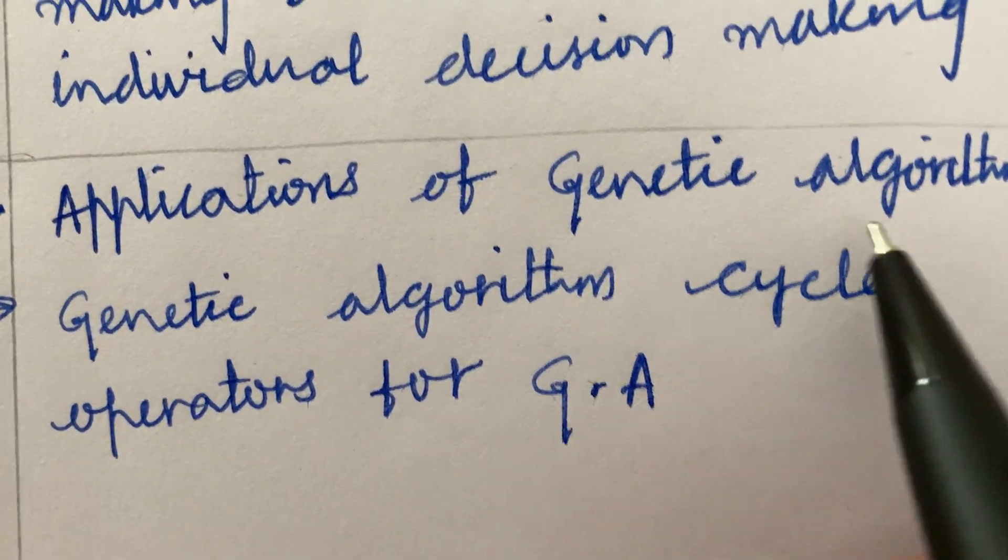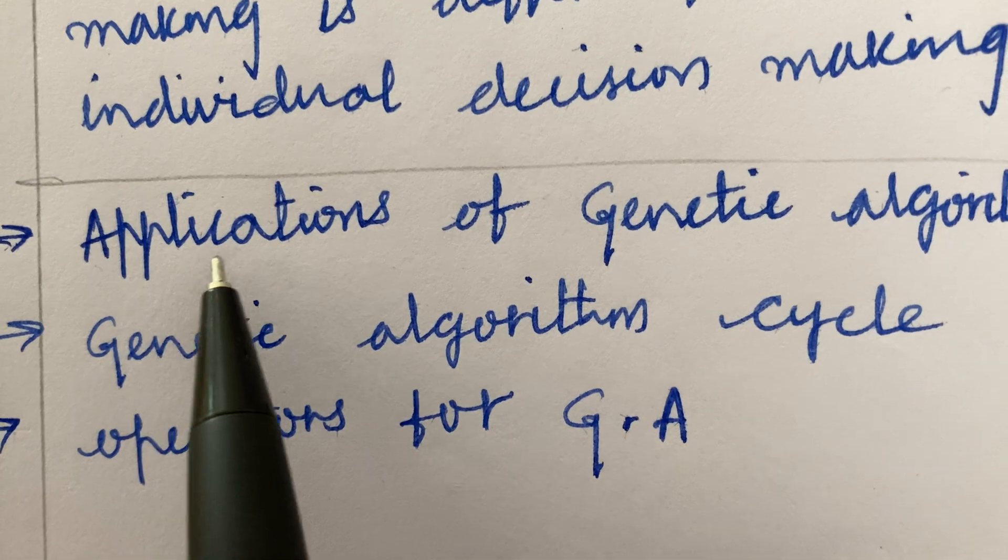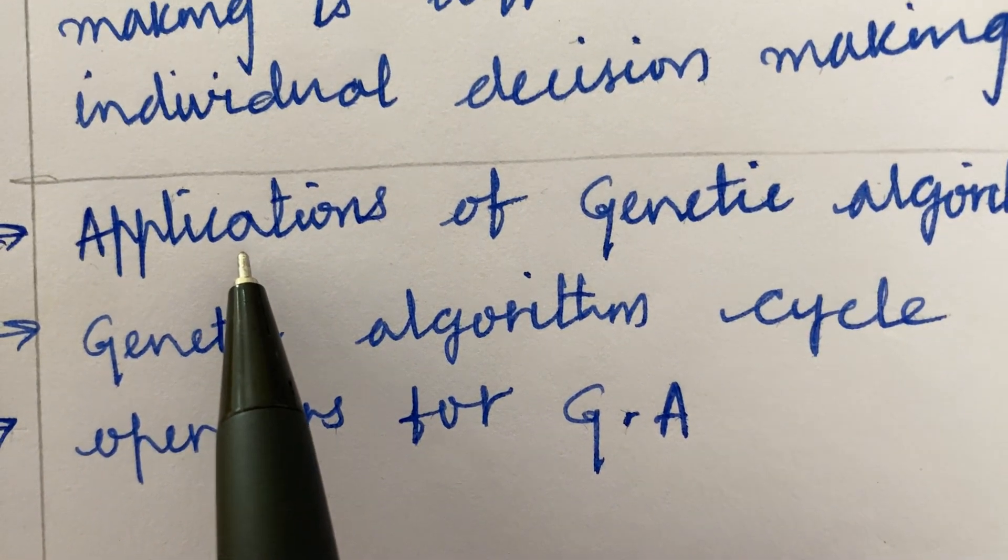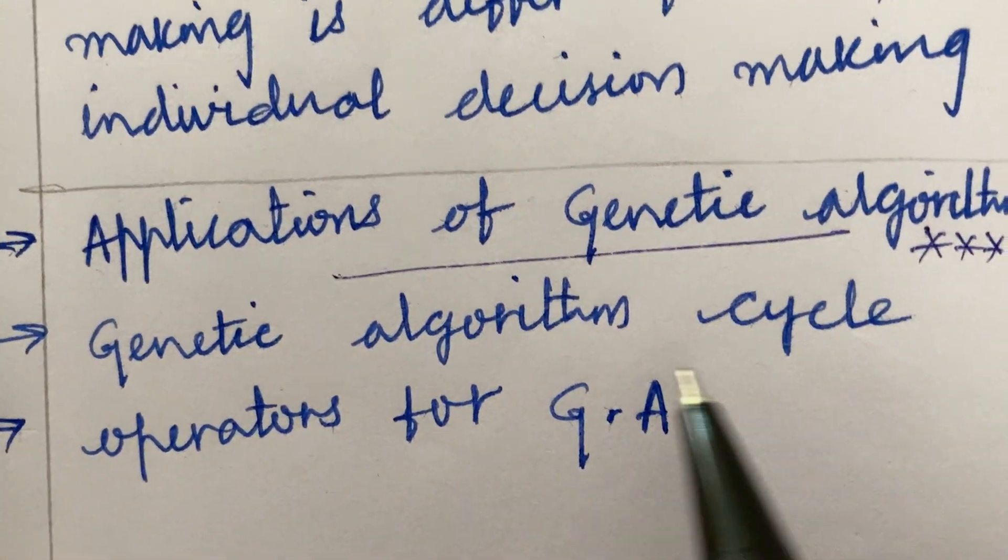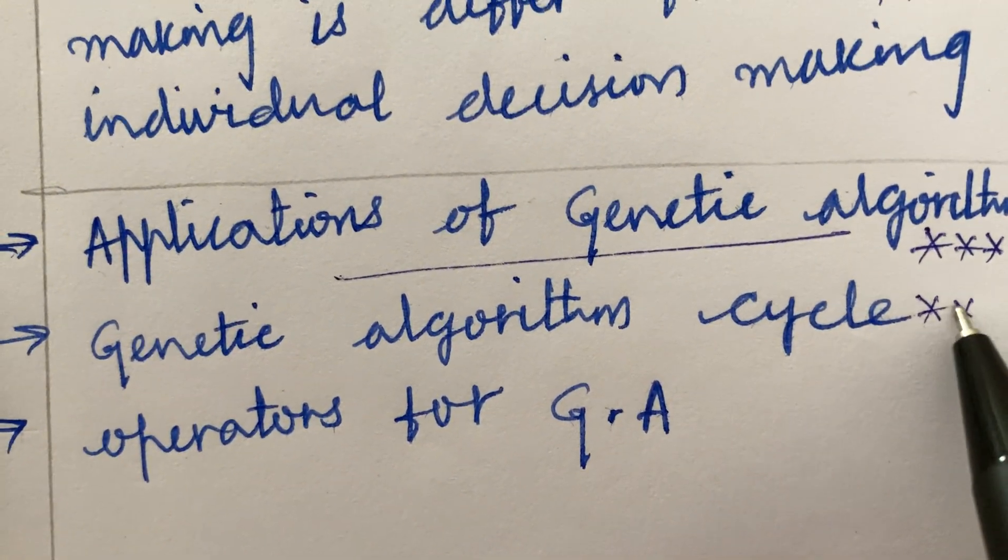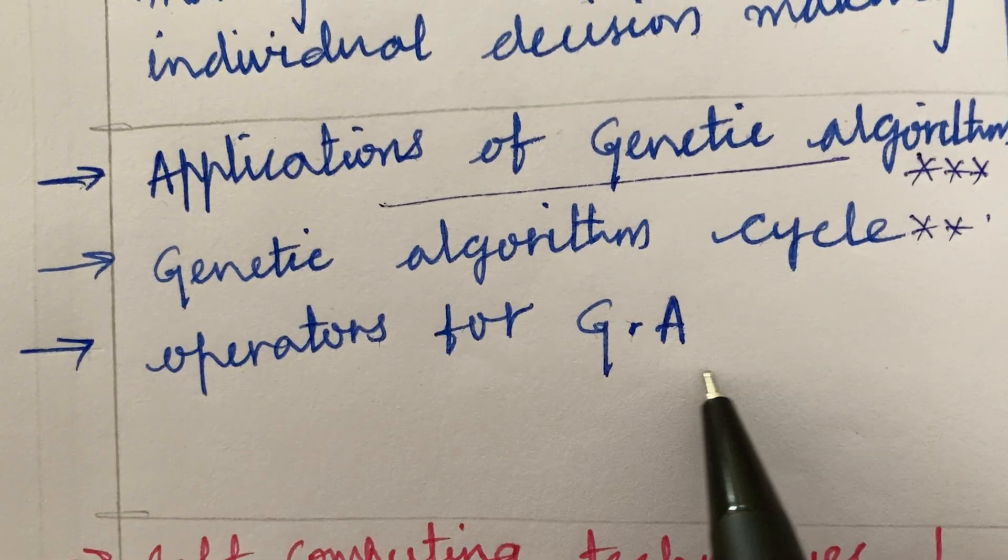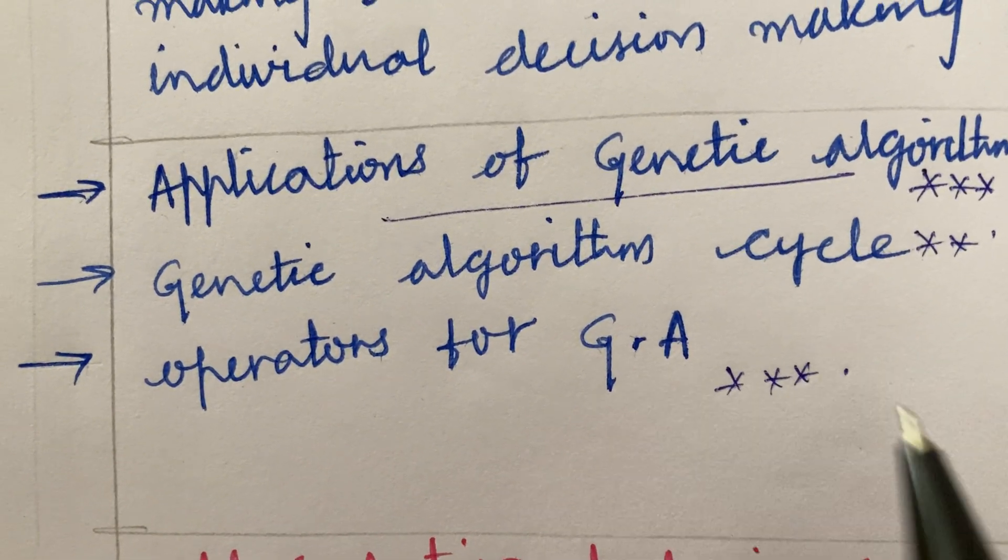You won't be getting enough time in a span of 3 hours. You are supposed to work out all the entire question paper. Applications of genetic algorithm is said to be very important and topmost question. Genetic algorithm cycle is a 5 mark question. The operators for genetic algorithm may be a 3 or 2 mark question.